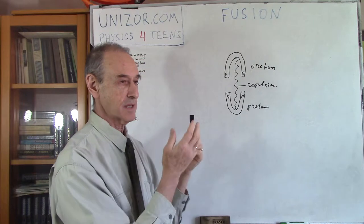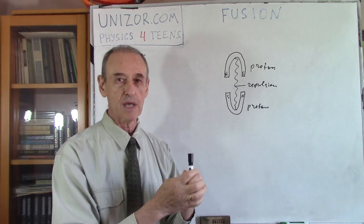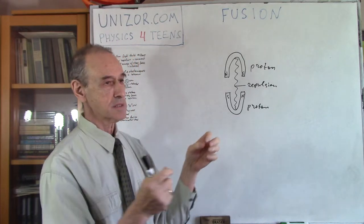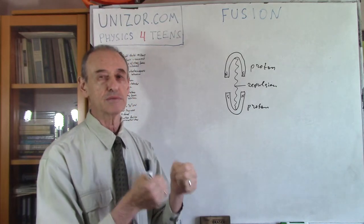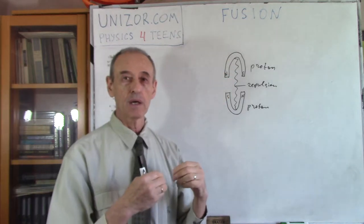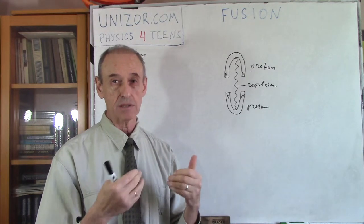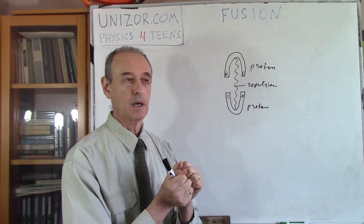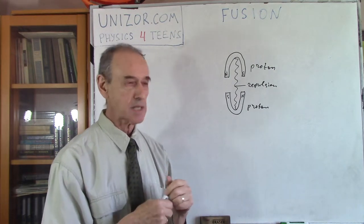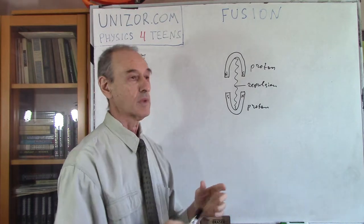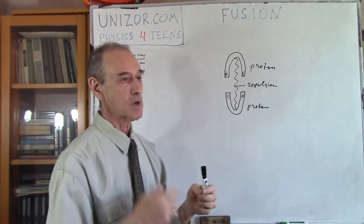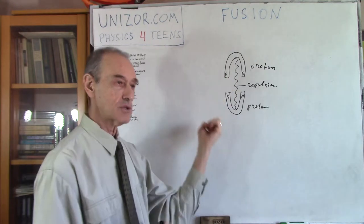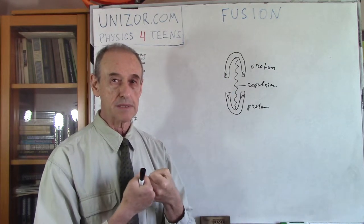This is exactly the model of how two protons are combined together into one nucleus. At a certain distance you can't do anything with them, but if you apply a certain amount of energy to bring them together against the electrostatic repulsion of the positively charged protons, at a very small distance the strong force will overcome the electrostatic resistance and a certain amount of energy will be released — because the strong force has more potential energy at that distance than the energy consumed by bringing them together against electrostatic repulsion.